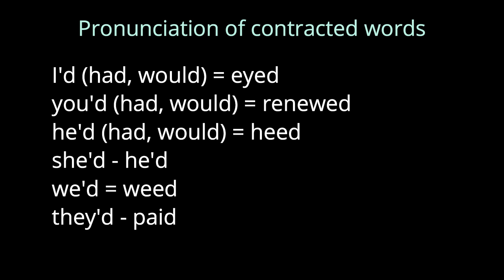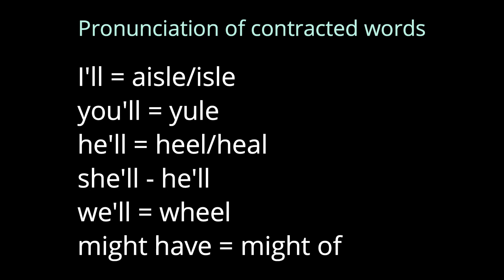More contractions: I'd (had/would) sounds the same as eyed. You'd (had/would) rhymes with renewed. He'd (had/would) sounds the same as heed. She'd rhymes with heed. We'd sounds the same as weed. They'd rhymes with paid. I'll sounds the same as aisle. You'll sounds the same as yule. He'll sounds the same as heel. She'll rhymes with heel. We'll sounds the same as wheel. Might've sounds like might've.